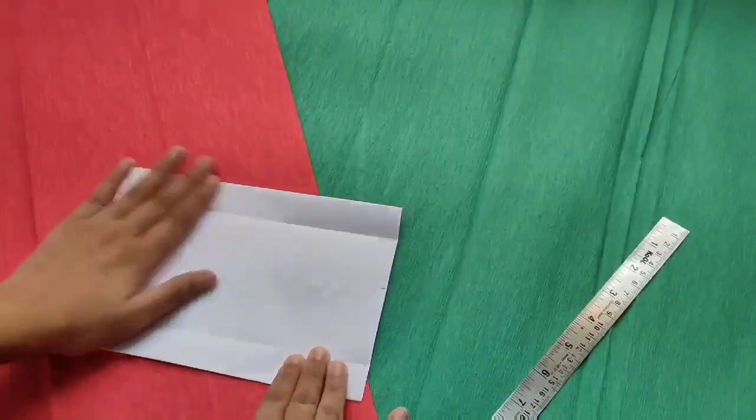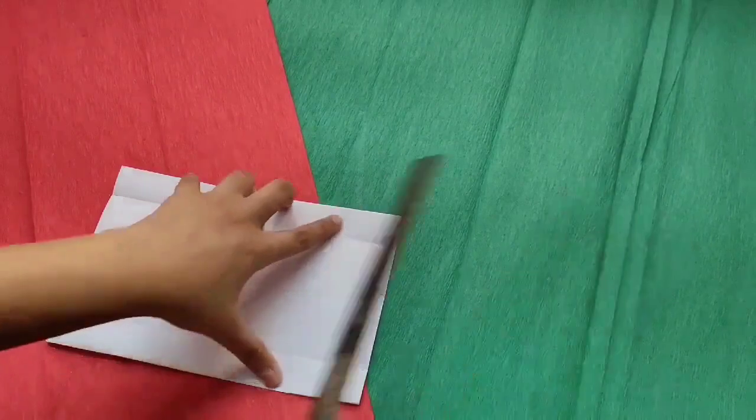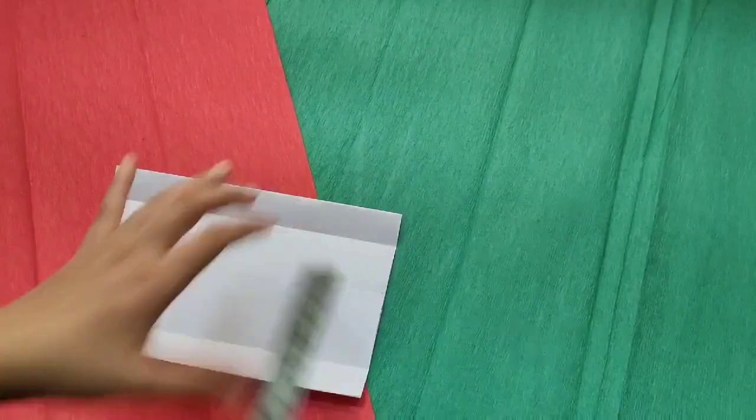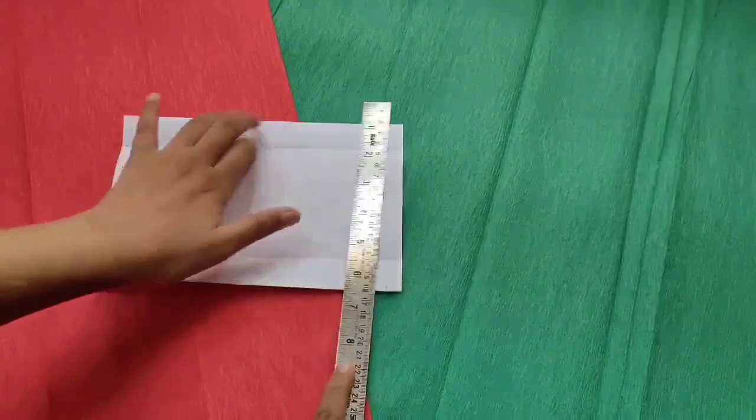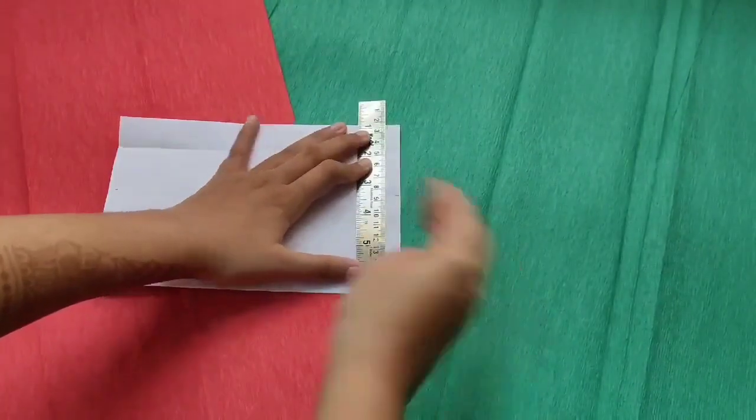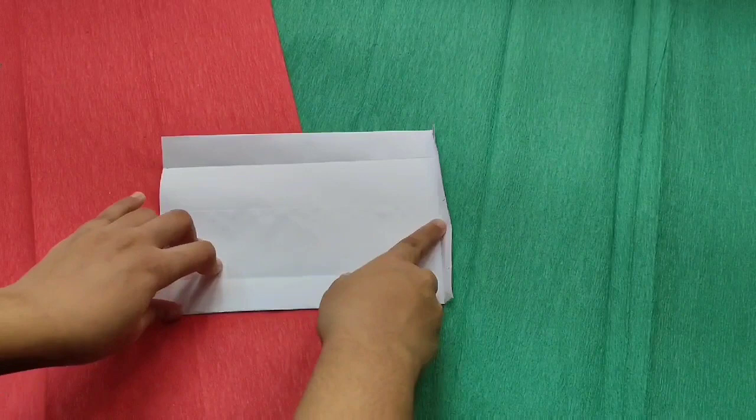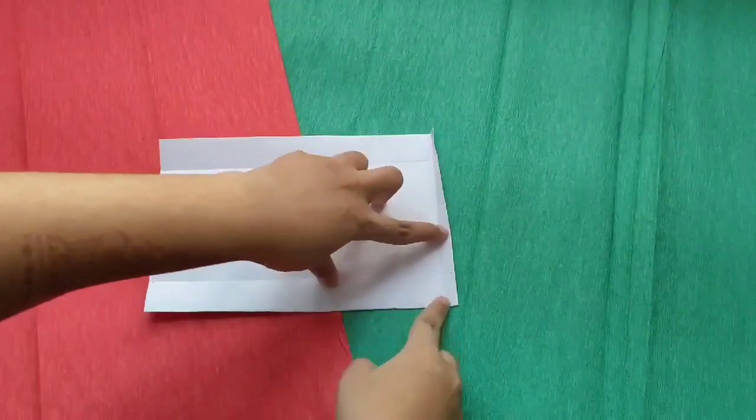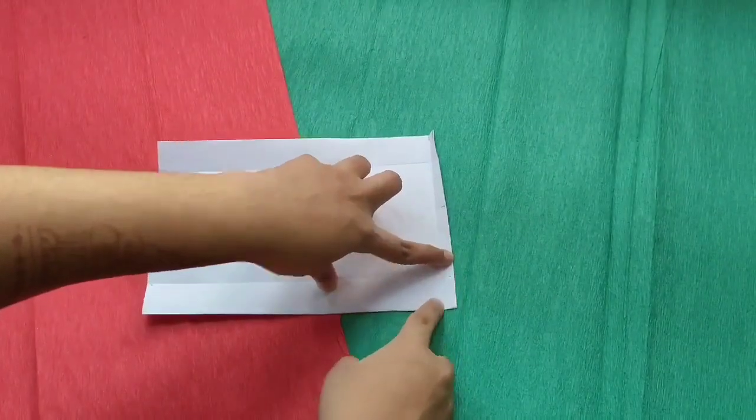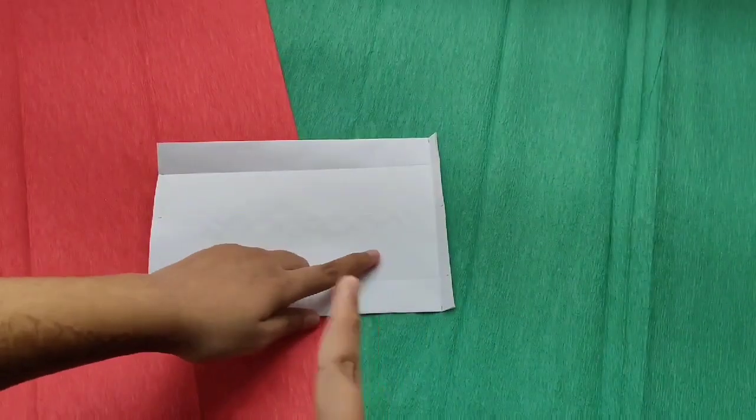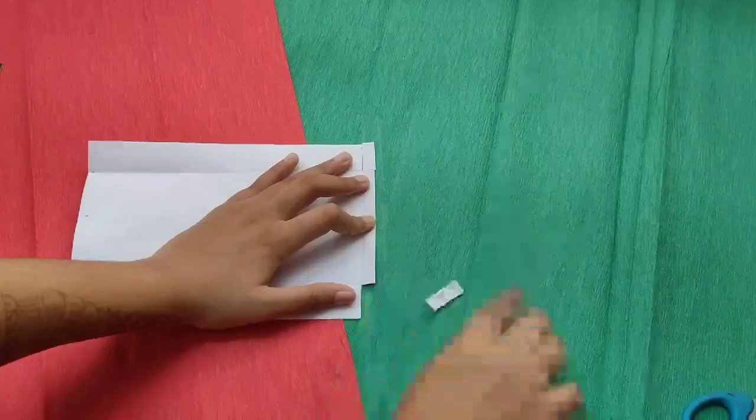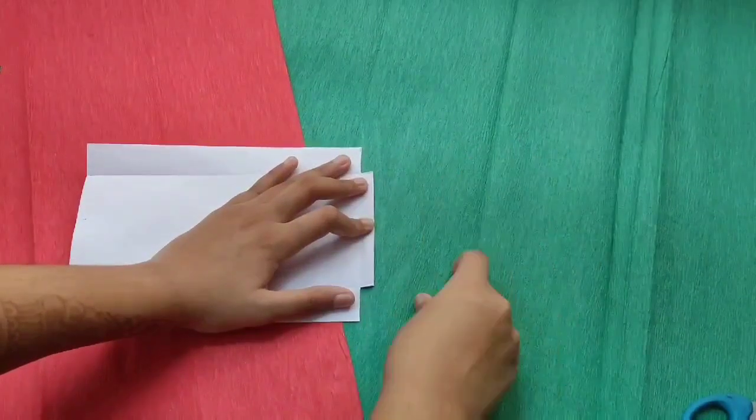Now we are going to open it back and measure 1 cm here and here. As you can see, I have measured 1 cm. Now we are going to place the roller and again create a crease. You can see, we have made a crease. Once you make a crease, you get a rectangle here as well as here. That we are going to cut. So now I have cut the two rectangles.